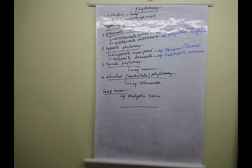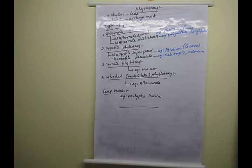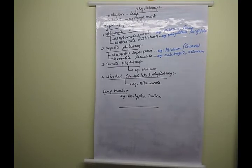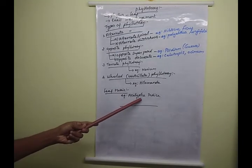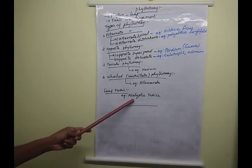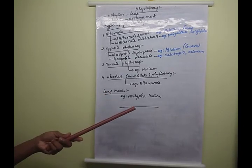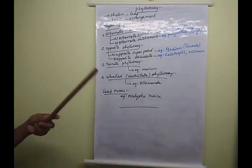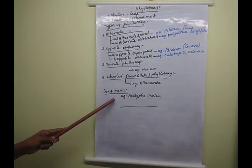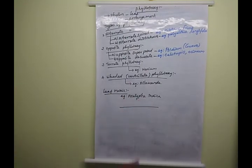The last topic is leaf mosaic. Leaf mosaic means leaves fit within one another. Its major function is to secure the maximum amount of sunlight and minimize overlapping. Example species: Acalypha indica (kuppaimeni in Tamil). In this plant, leaves with shorter petioles and longer petioles are both present, so all leaves get sufficient sunlight.